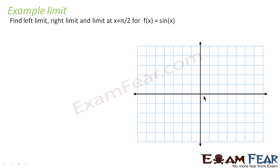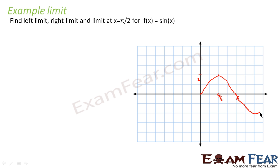Here we have to find the left limit, right limit, and the limit at x equal to π/2 for sin(x). So this is 0, and let me assume this is π/2. sin(0) is 0, sin(π/2) is 1, and sin(π) is 0. So the sin function is a curve that rises to 1 at π/2 and comes back down.